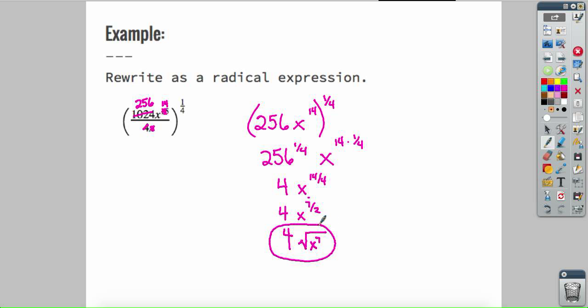After I have simplified that, I have 4 times the square root of x to the 7th. I could also write that as 4 times the square root, and I better put parentheses here because that 7th power only applies to the x, not to the 4. I could write this either way. These are both absolutely correct answers.